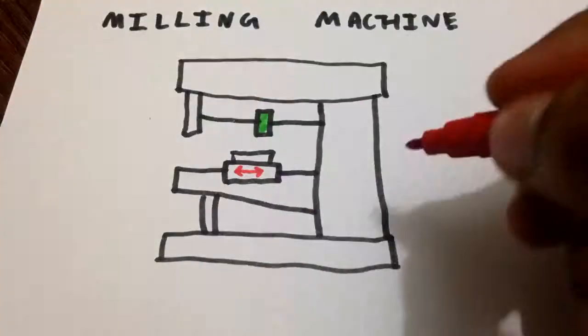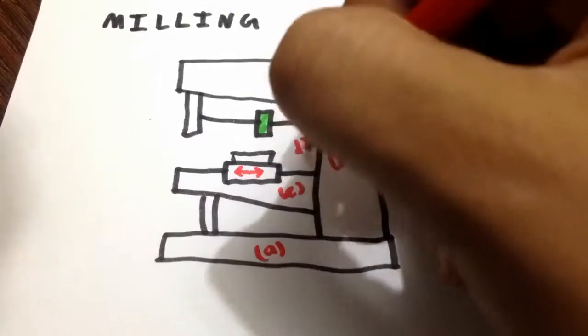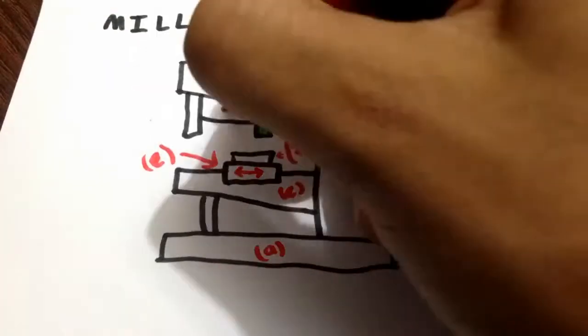The machine tool on which the milling operation is performed is called a Milling Machine. A Milling Machine contains the following elements: A. Base, B. Column, C. Knee, D. Table, E. Saddle, F. Overarm Arbor.